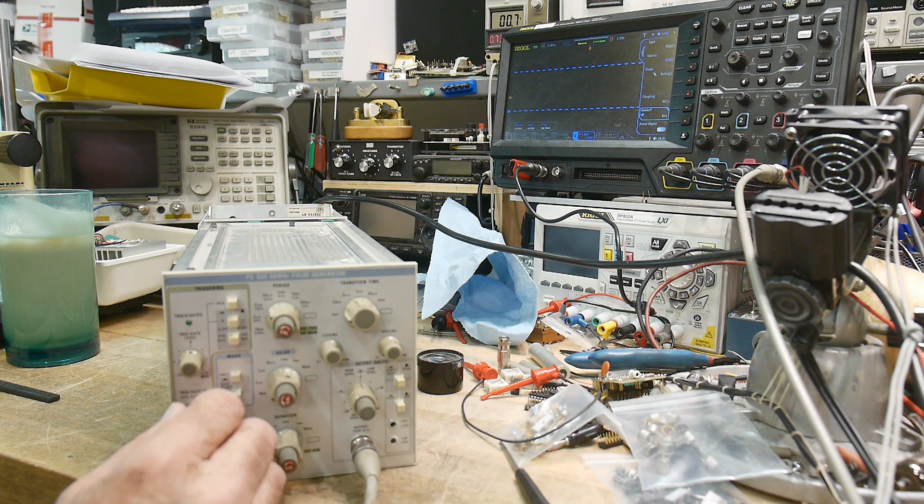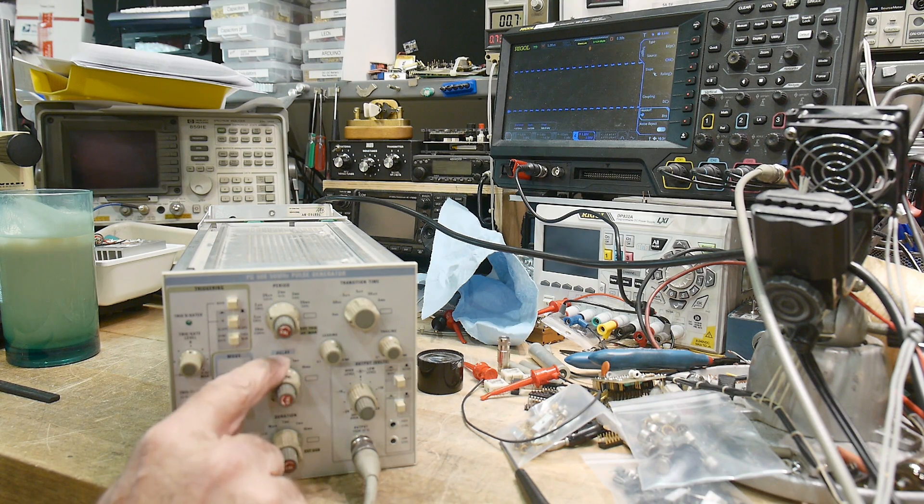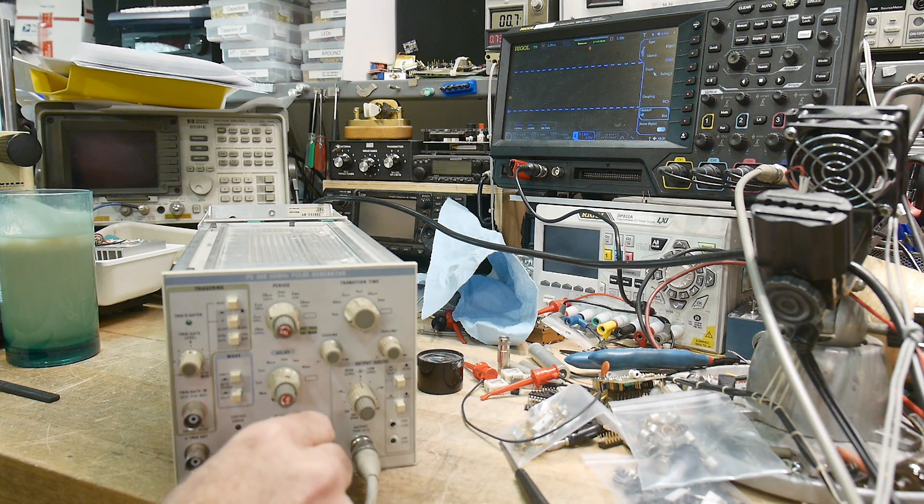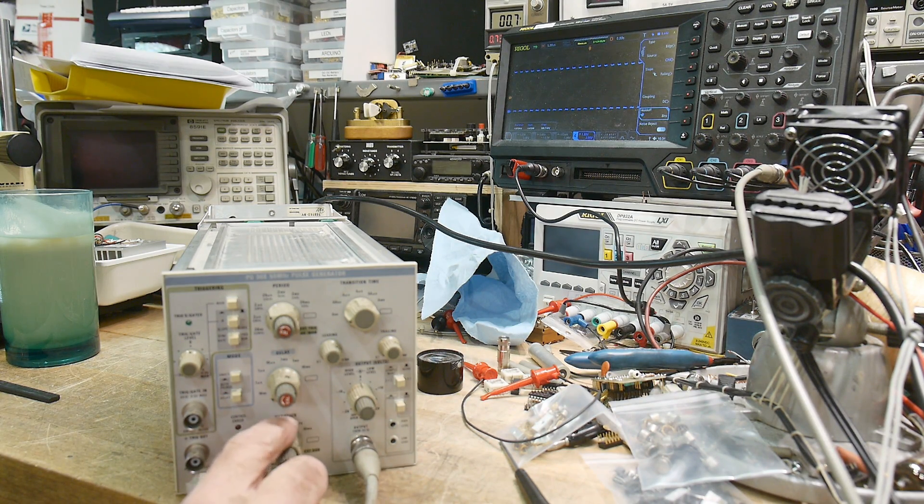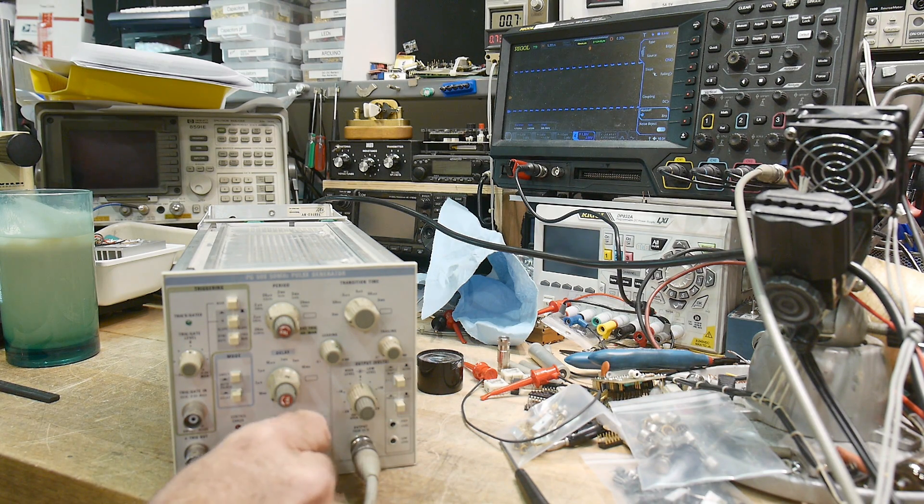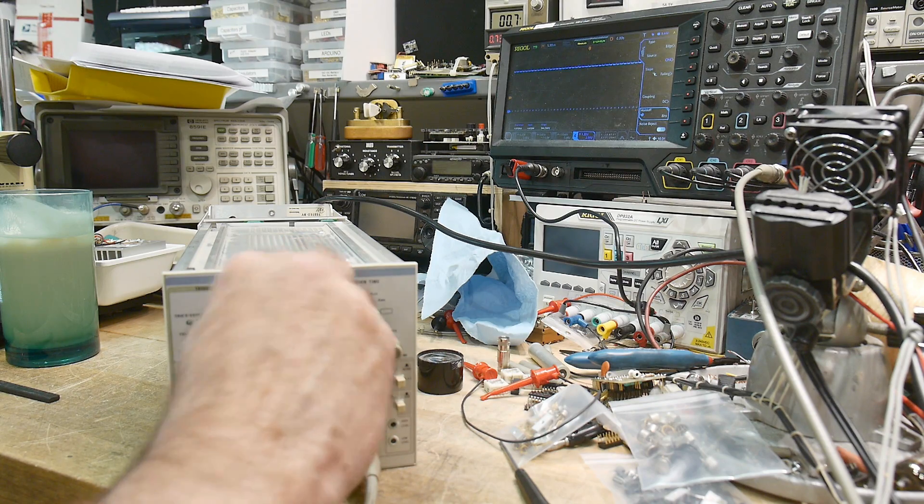If you're inputting a pulse from the outside, you also have a delay knob. You can delay the pulse from your edge. That's what this knob does. And then the pulse period, the pulse duration is this one. That's how wide your pulse is.